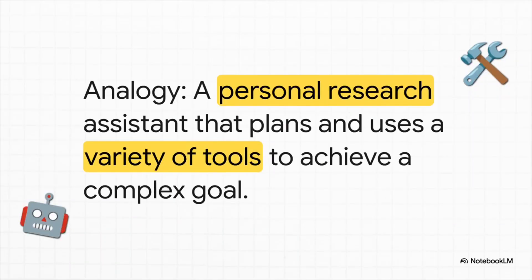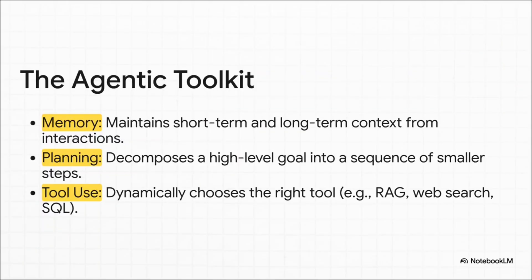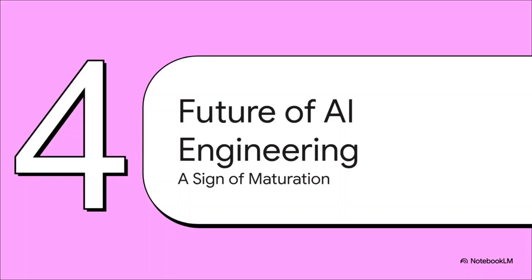The second path is even more radical: Agentic RAG. If CRAG is like an upgraded GPS, Agentic RAG is like hiring a brilliant personal research assistant. You don't just ask it a simple question — you give it a complex goal. The agent then plans out the task, executes a whole series of steps, and uses a whole toolkit of different resources to get you the best possible answer. The agent has memory, so it can remember what you've talked about before. It has planning abilities, often using frameworks like ReAct to reason and strategize. And it has tool use. The LLM is now in the driver's seat — not just the final writer, but the orchestrator, the project manager deciding: for this part, I need a vector search; for this other part, I need to search the web; and for this last piece, I need to query a database.